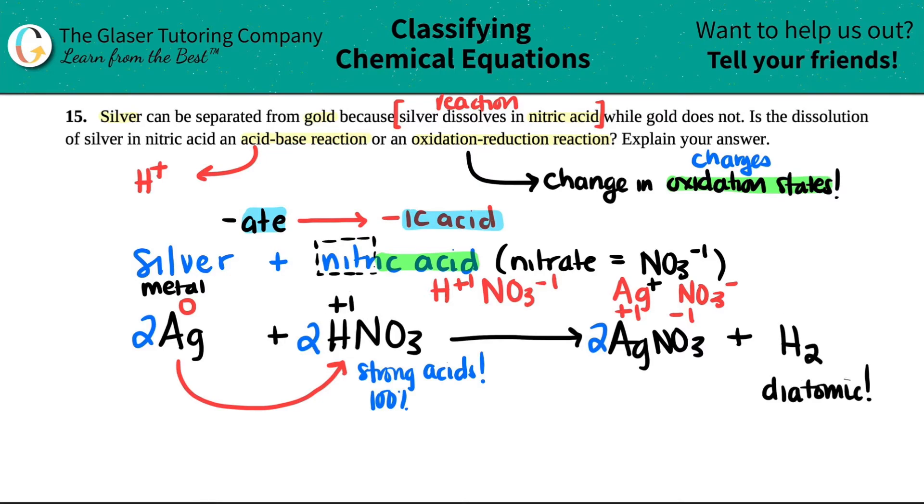But then if we look over here, hydrogen now changes its charge. It's by its lonesome. And any element by itself is always a zero charge. So the elements change their charge across the yield sign.